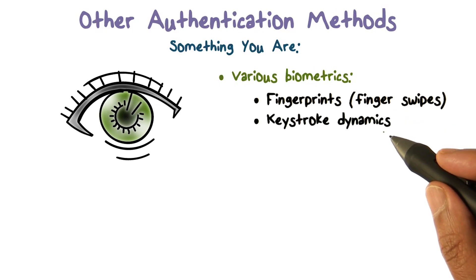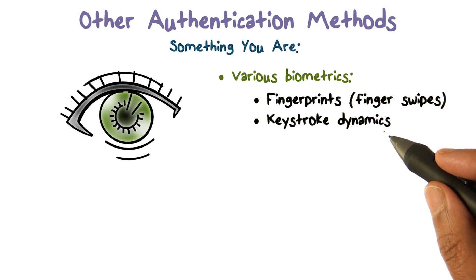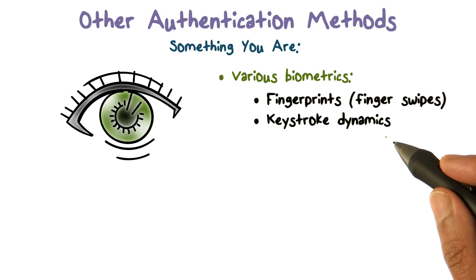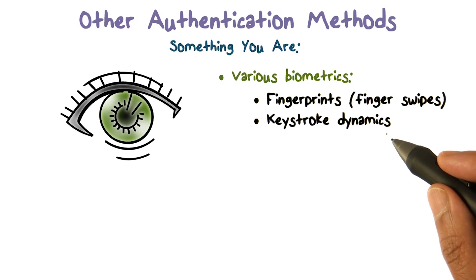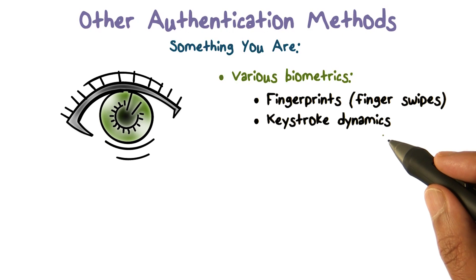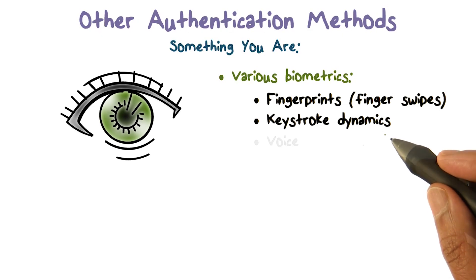When it comes to keyboard, the way you type — the keystroke dynamics — how fast you are, how long you take from one key to the next depending on what the keys are, sometimes that is used as biometric features derived from the speed or pattern of your typing, which could be a biometric that's unique to you.